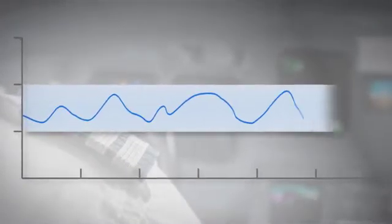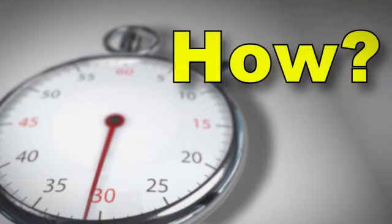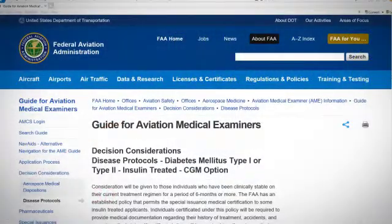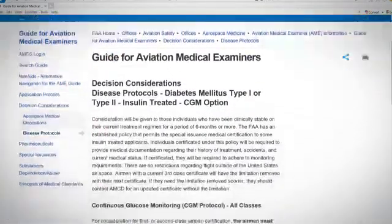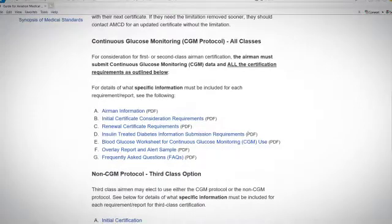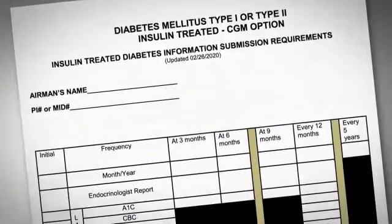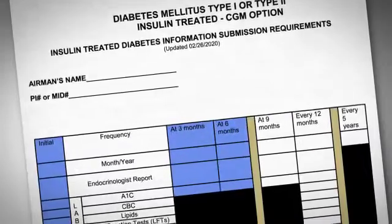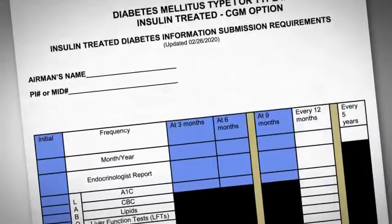The pilot's blood sugar must remain under control at all times. So how do AMEs help pilots know what information to submit and when? The AME and pilot should use the ITDM Information Submission Requirements Worksheet to ensure all documents are submitted at the proper times.